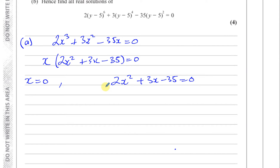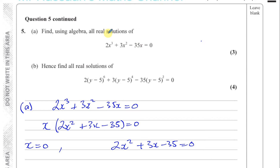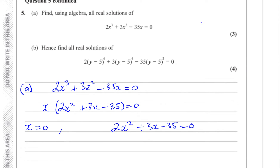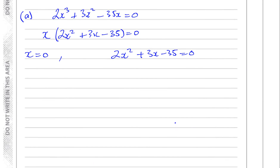This is now a quadratic equation. You can't just put it into a calculator and write down the answers — you have to show that you've factorized it, used completing the square, or used the quadratic formula. It seems like it should factorize because if it couldn't, the question would normally say 'find all real solutions in exact form' or specify decimal places.